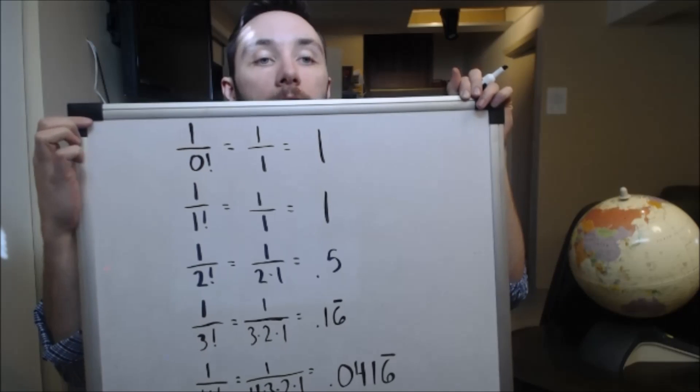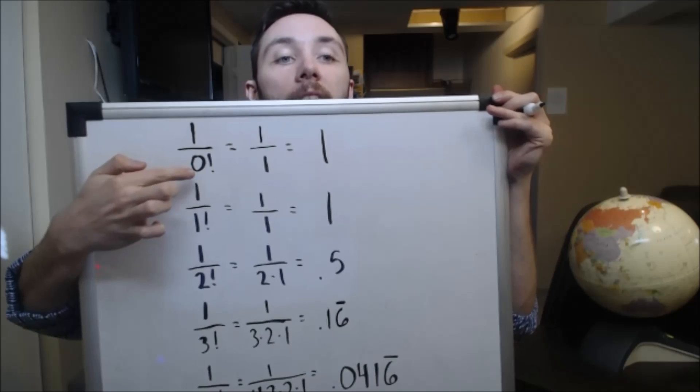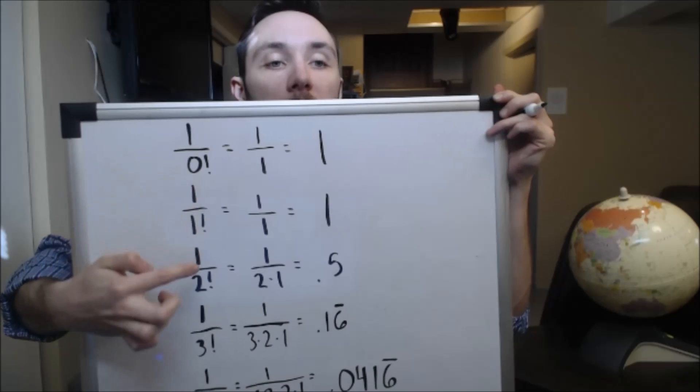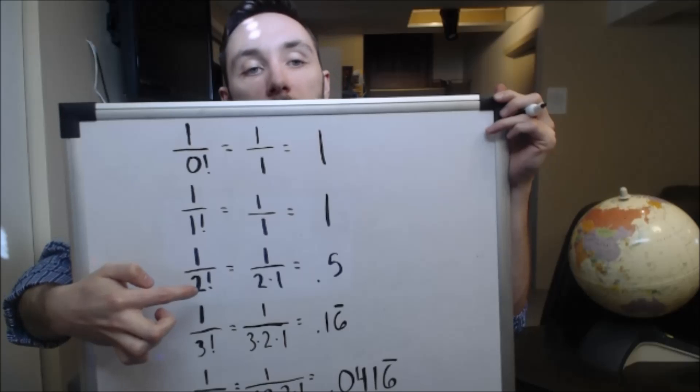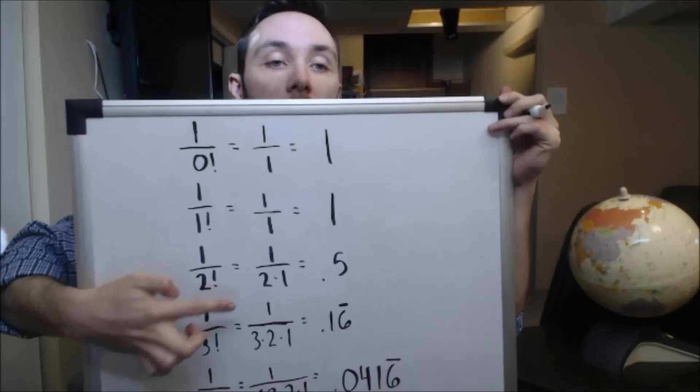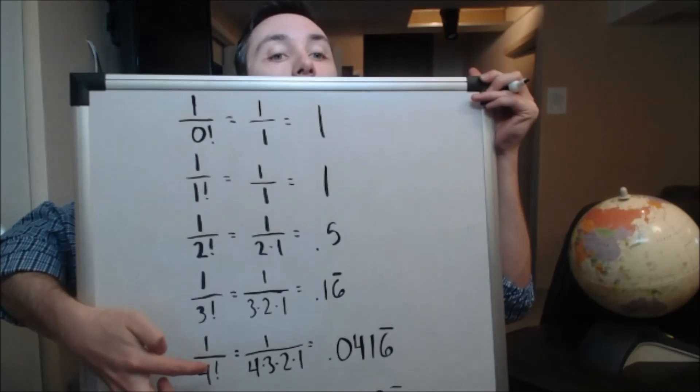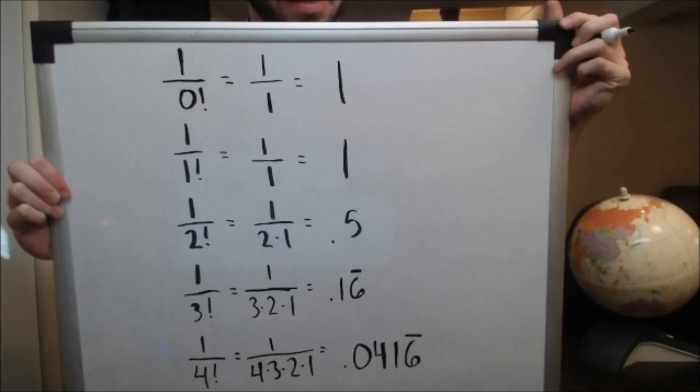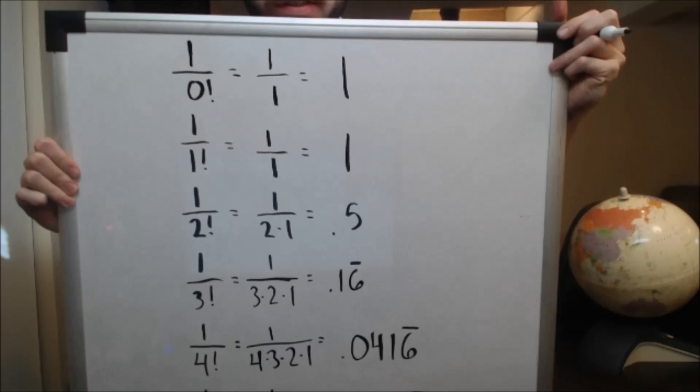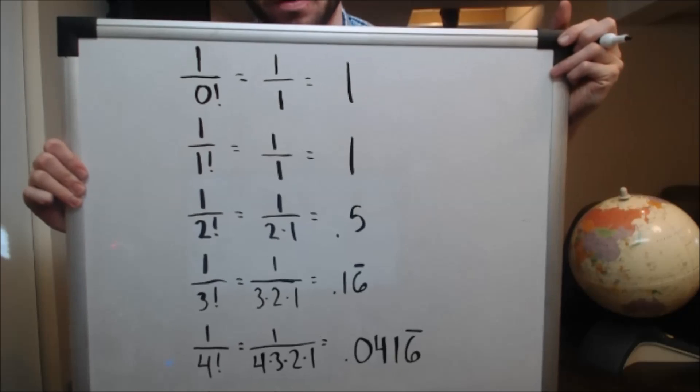Now, if anyone doesn't know what factorial means, the idea of factorial is just like if you have 2 factorial, you just multiply all the values, starting at 2, and every number beneath it. So, like 2 times 1. 3 factorial, that's just 3 times 2 times 1. 4 factorial, that's 4 times 3 times 2 times 1. That's the idea of factorial. Anyway, consider the following. Let's just say you have 1 over 0 factorial, and 0 factorial is just equal to 1. You get 1 over 1, and that's equal to 1.